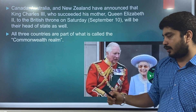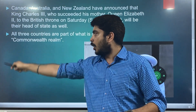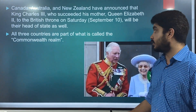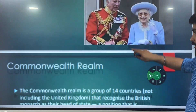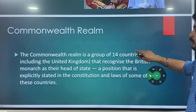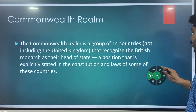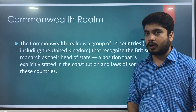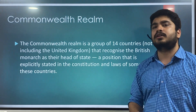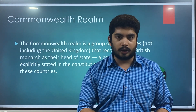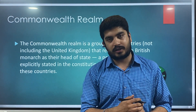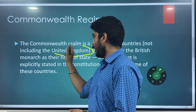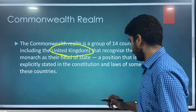These three countries make up what is called the Commonwealth Realm. What is Commonwealth Realm? It is a group of 14 countries who consider the monarch of Britain to be head of their state. This does not consist of the UK — the United Kingdom.